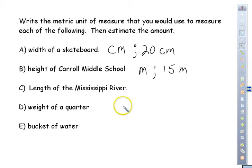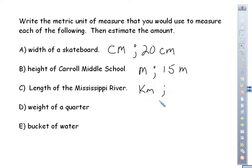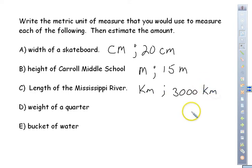For the length of the Mississippi River, we'll definitely use kilometers since it covers a great distance. If it spans roughly 1,500 miles and a kilometer is a little more than a half mile, we can roughly double that — so we'd estimate about 3,000 kilometers long.